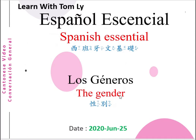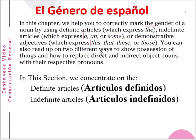Los Generos — The Gender. In this Chapter 2, we help you to correctly mark the genders of a noun by using the definite article, which expresses 'the'; the indefinite article, which expresses 'a', 'an', or 'some';